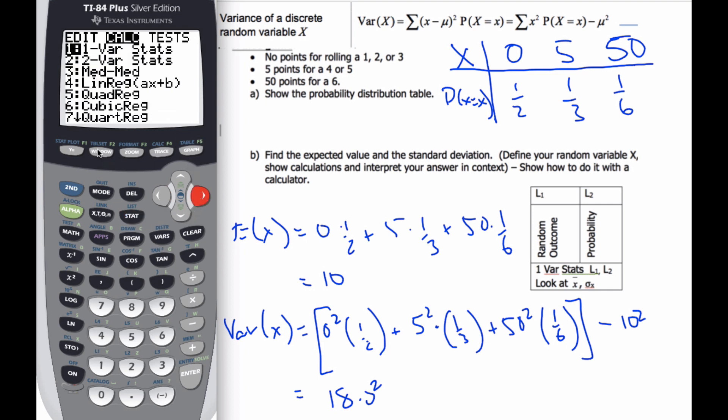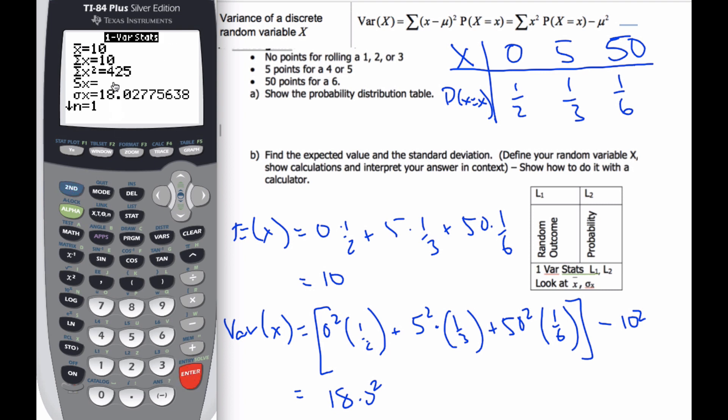And then I go to statistics. I'm going to calculate one variable statistics. And I want L1, so second number one, to be my list and my frequency is the probability. And then I calculate my variable. So here is my expected value of 10 and this is my standard deviation.